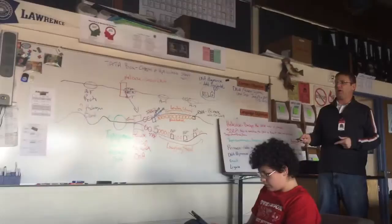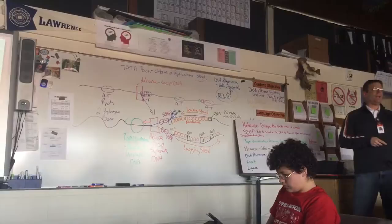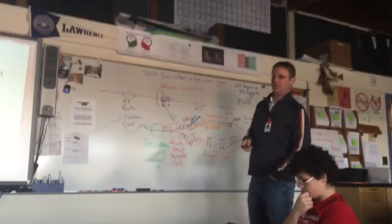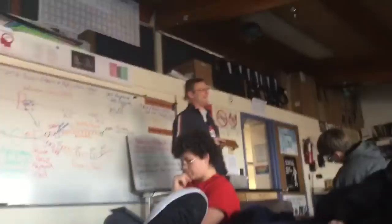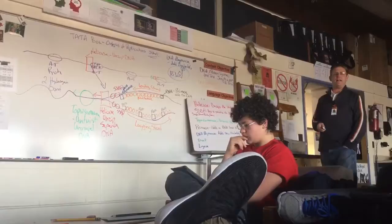Then DNA polymerase comes along and adds in new nucleotides. DNA polymerase — represented by this blue square — keeps adding new nucleotides. Remember, the nucleotide is the sugar, the phosphate, and the base. DNA polymerase is what's actually making the new DNA by adding new nucleotides to the RNA primer.